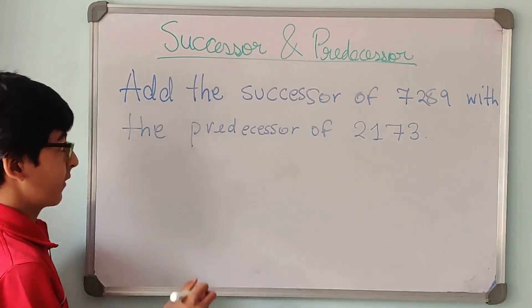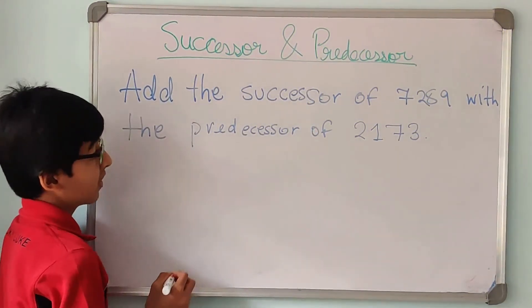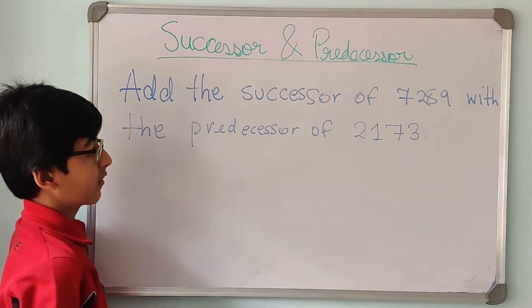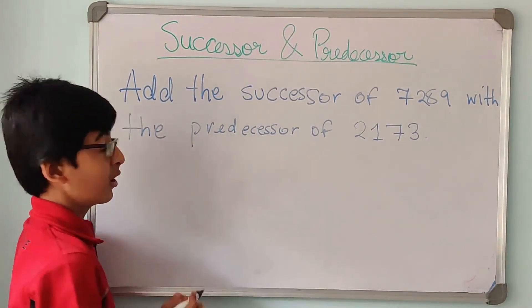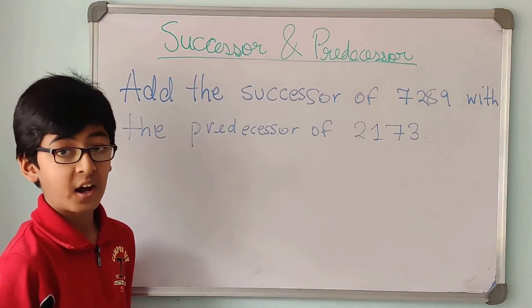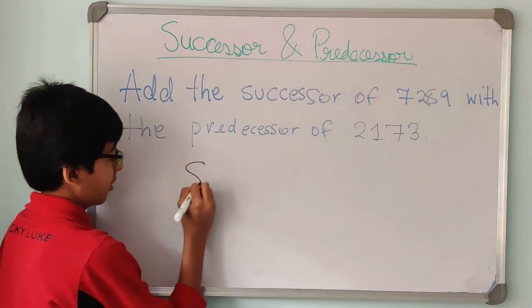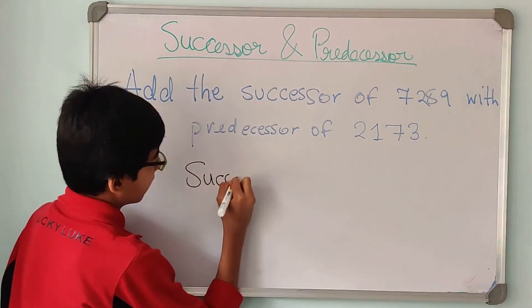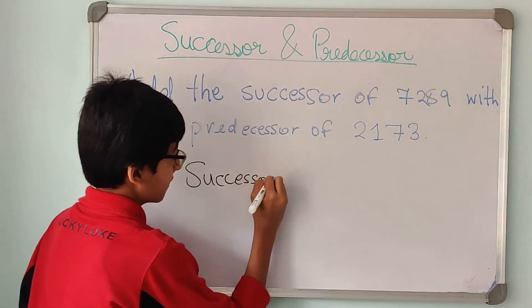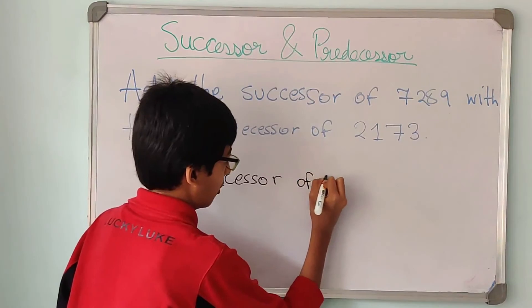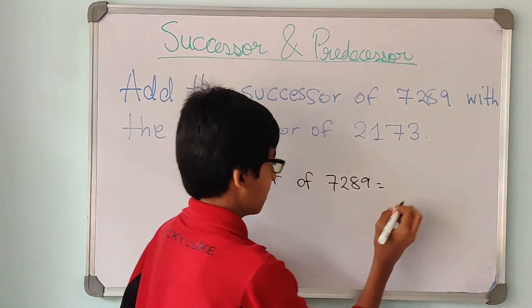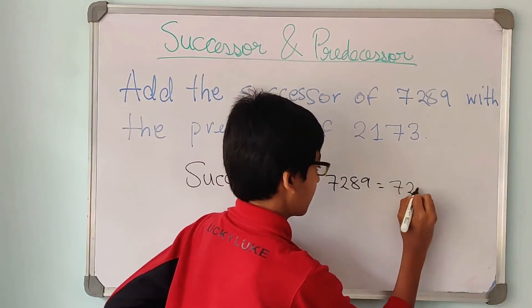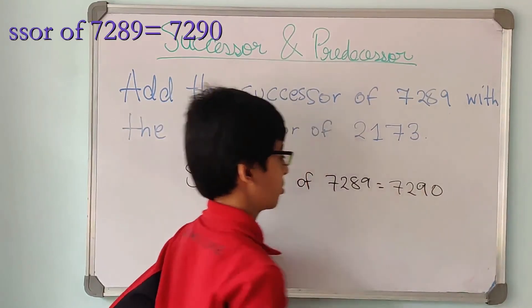Now let us solve this question. Add the successor of 7289 with the predecessor of 2173. Now how do we solve this question? The first step is that we have to find the successor of 7289. So if we add 1 to this, we will get 7290.